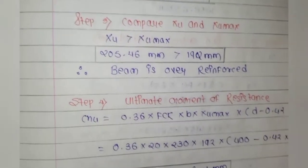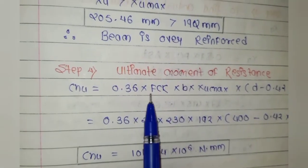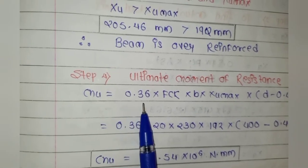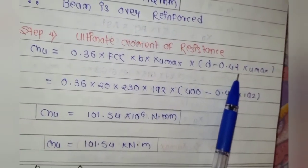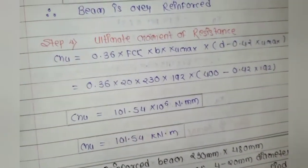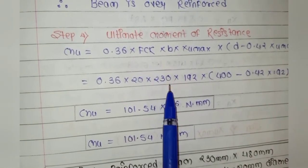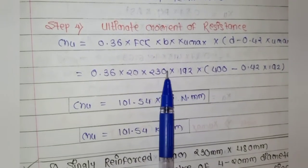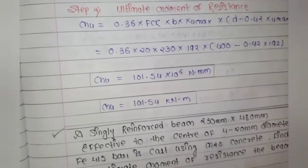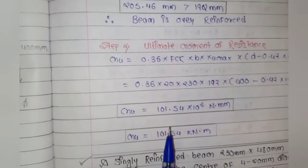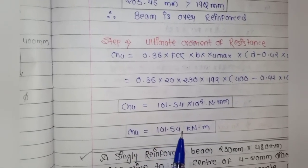Last step: Find ultimate moment of resistance. For an over reinforced beam, the formula changes because it is governed by the compression member. MU = 0.36 × fck × b × XUmax × (D − 0.42 × XUmax) = 0.36 × 20 × 230 × 192 × (400 − 0.42 × 192). The answer is in kN·m.